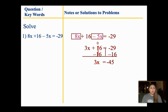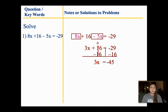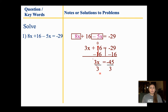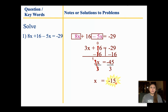Whenever I have a number next to a variable, we're going to treat that as a multiplication sign — 3 times x. What's the opposite of multiply? Divide. So I'm going to divide both sides by the coefficient, which is 3. 3 divided by 3 gives me 1, so I bring down my x. 3 goes into 45 fifteen times, and since it's a negative and a positive, my answer is negative. So x equals negative 15.